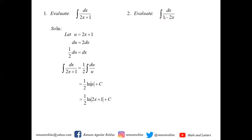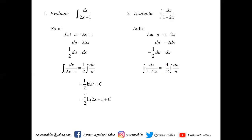Another one: the integral of dx over 1 minus 2x. We let u equal 1 minus 2x, so du equals negative 2dx. Since we only have dx, we get negative one-half du equals dx. This becomes negative one-half times the integral of du over u, which gives negative one-half ln(u) plus c. Writing back: negative one-half ln(1 − 2x) plus c.